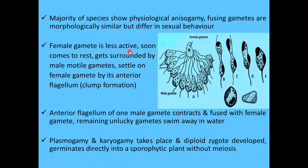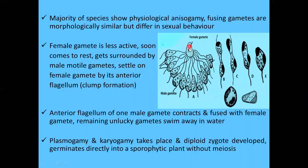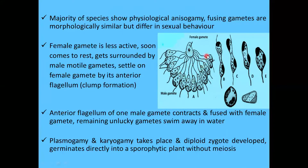In physiological anisogamy, the female gamete is less active and soon comes to rest. It then gets surrounded by the more motile male gametes, which attach to it via their anterior flagellum, forming a structure known as clump formation.